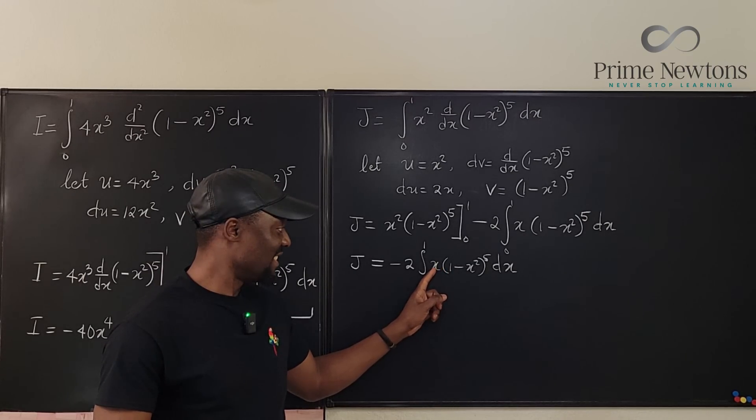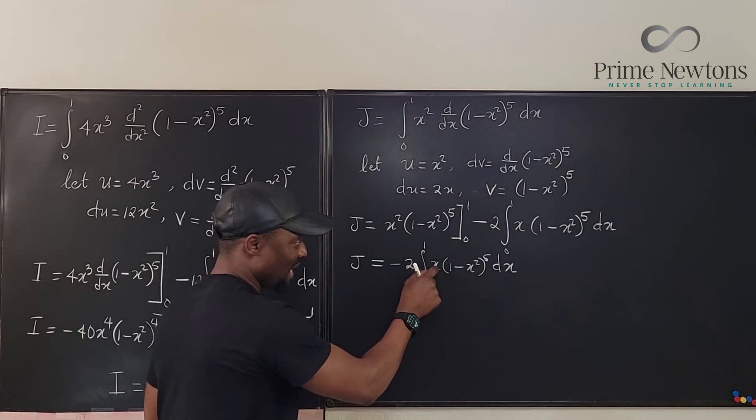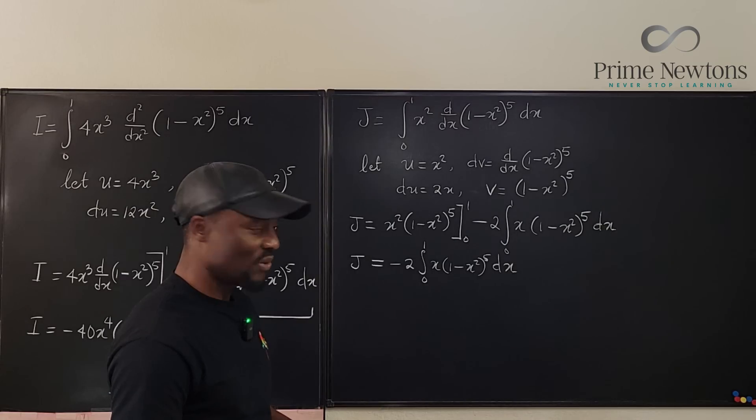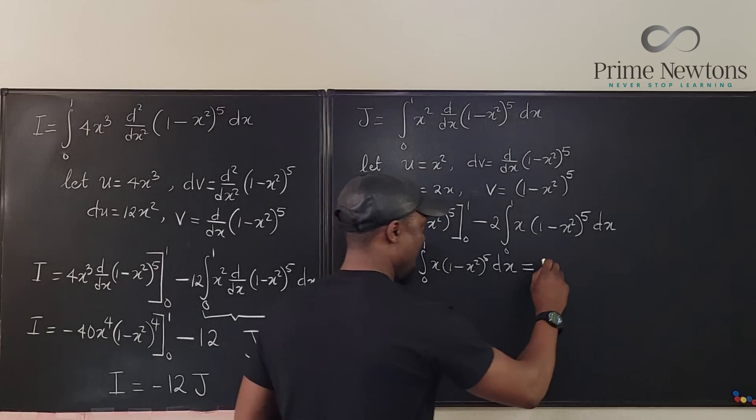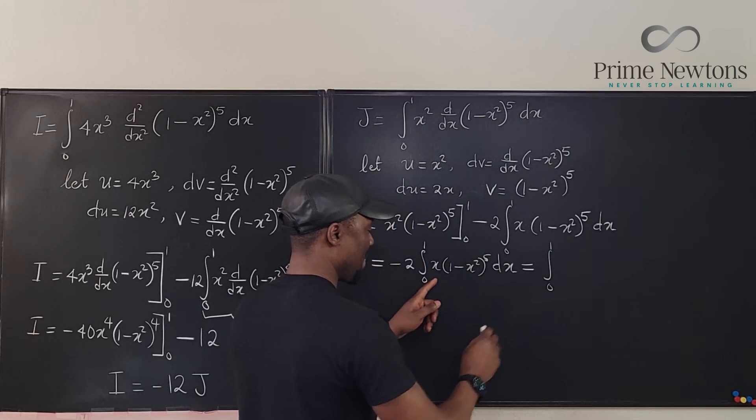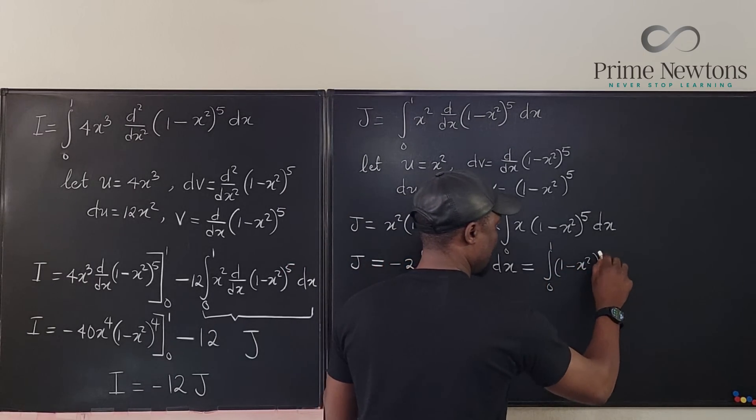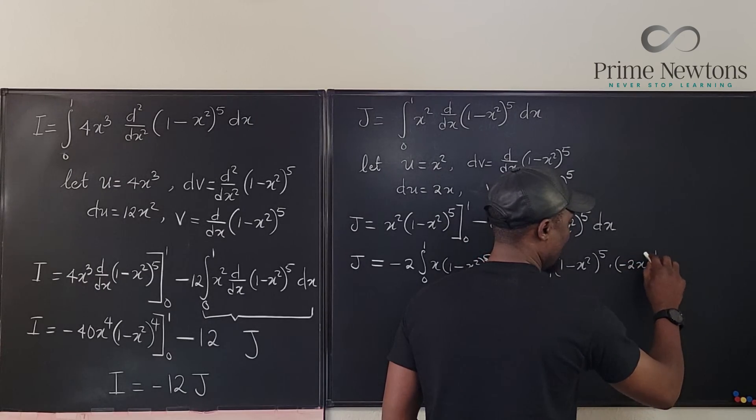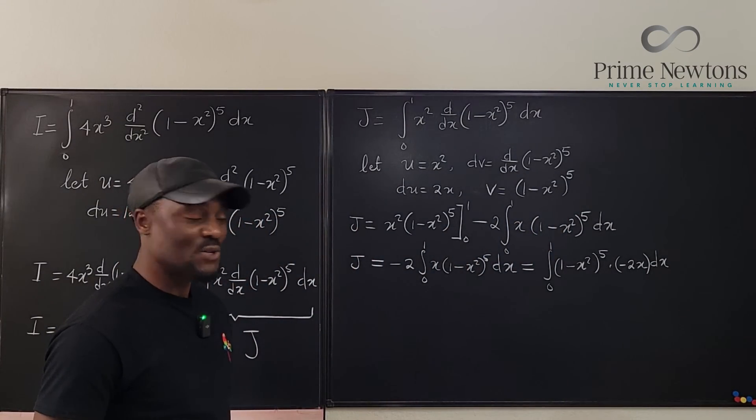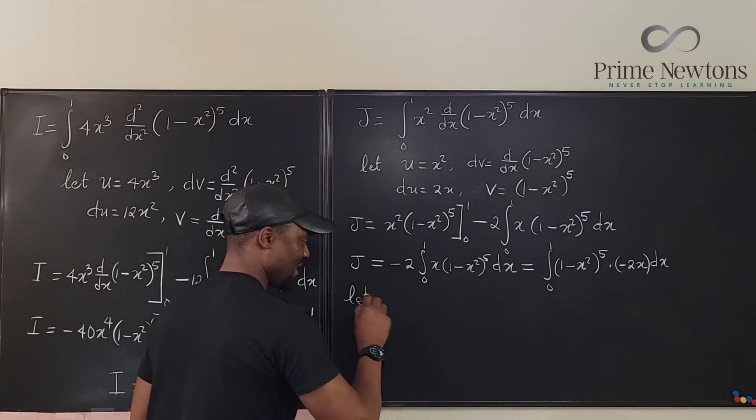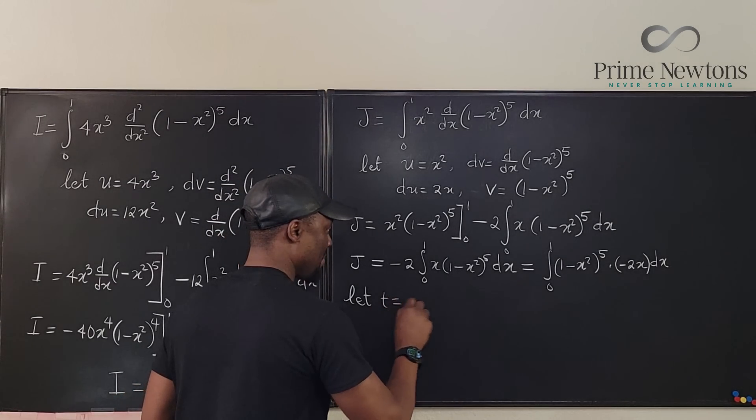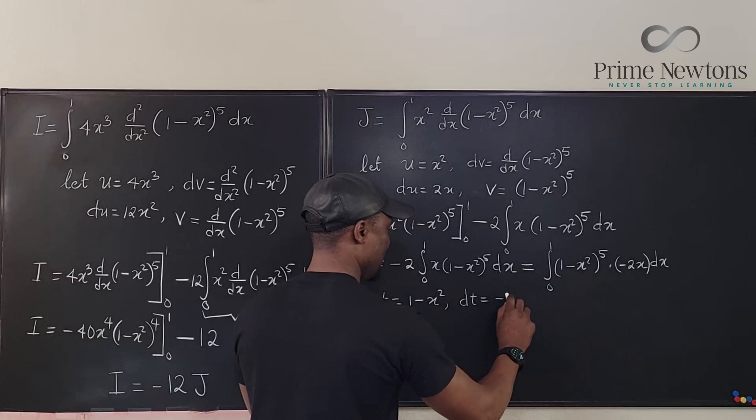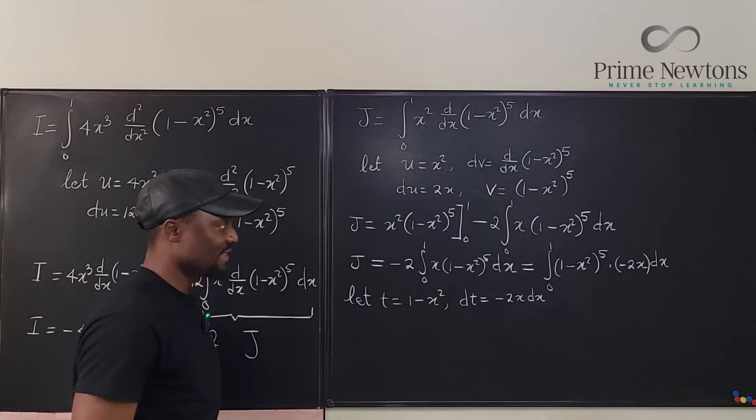And now I can see the future from here because the derivative of the inside is negative 2x. I can see it that this is negative 2x so what I'm going to do is I'm going to move this negative 2 inside. This is going to be the same thing as the integral from 0 to 1 of 1 minus x squared to the 5th times negative 2x dx. Why did I do that? Because of the u substitution I'm going to do. Let's do t this time. Let t be equal to 1 minus x squared. So you see that dt equals negative 2x dx.